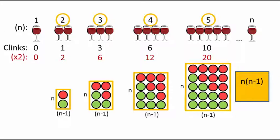However, since we have doubled our clinks, we now have to halve them, so we divide our formula by 2. This gives us a formula that will match the number of clinks with any number of glasses, otherwise known as the nth term rule.